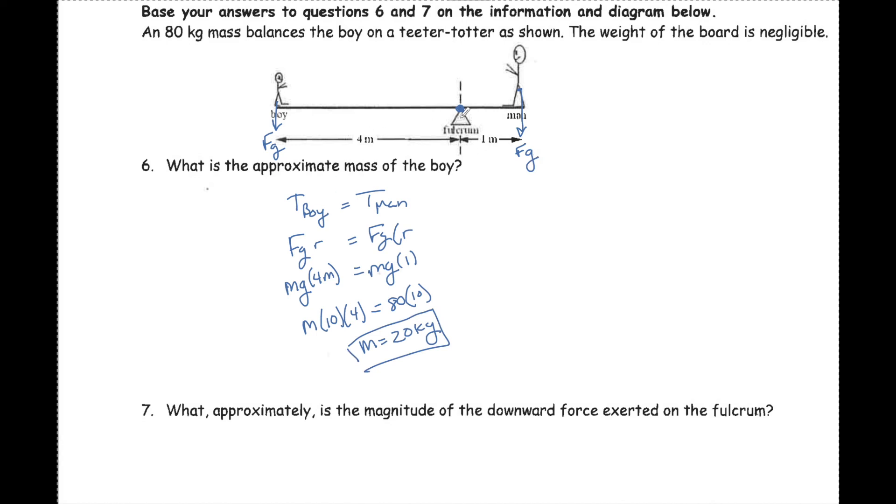So on this fulcrum point, the man pushes down with a force of 800 newtons and the boy pushes down at 200 newtons. If these are pushing down, the fulcrum points up. To equal that out, because everything is in balance, the downward force exerted on the fulcrum is 800 plus 200, which equals 1000 newtons.